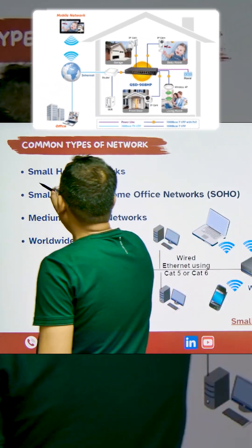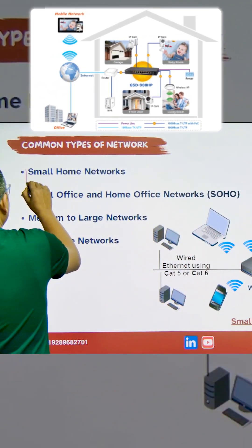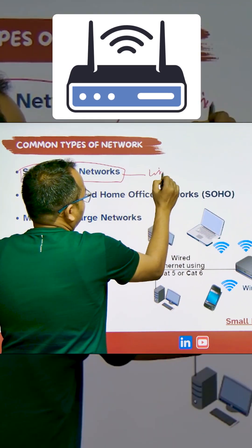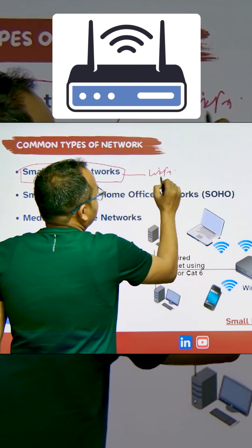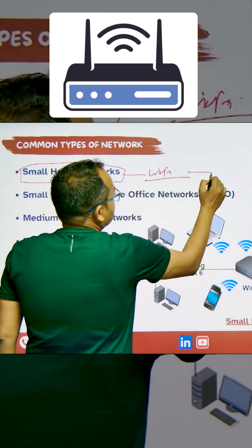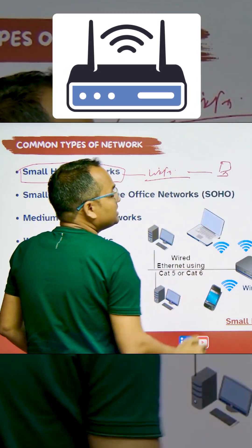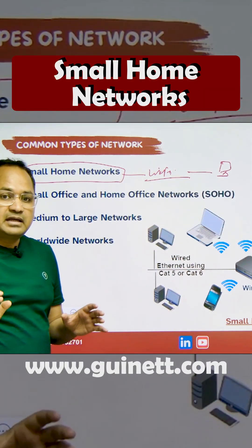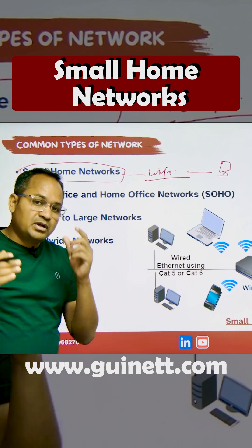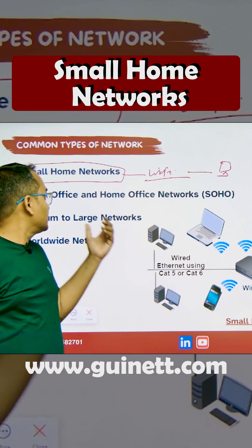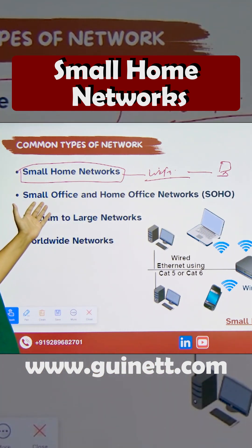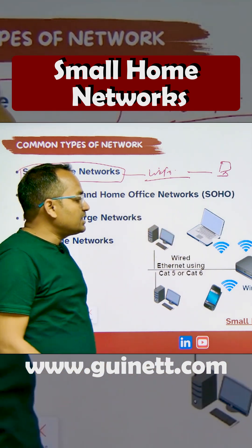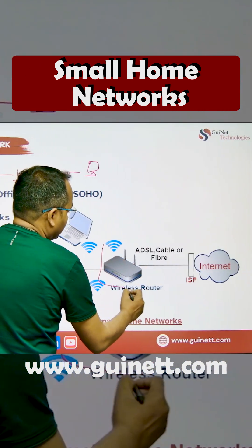If I talk about a small home network — that is your home network — you're just going to take a Wi-Fi from your ISP, and that Wi-Fi is going to connect you to the internet. So in your home, if you're building any connectivity through your computer to your router, that is known as the small home network. Similarly, we have the small office network, where we are going to use the wireless router.